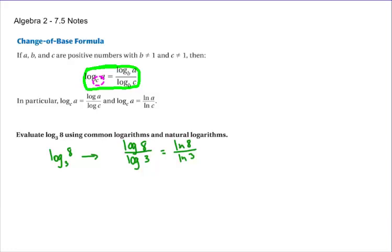It's not a hard deal. Don't let this part be hard. You can punch it into your calculator. Log eight divided by log three is the same as the natural log of eight divided by the natural log of three. Both of those are going to equal the same thing. When I punch this into my calculator, I get 1.893.